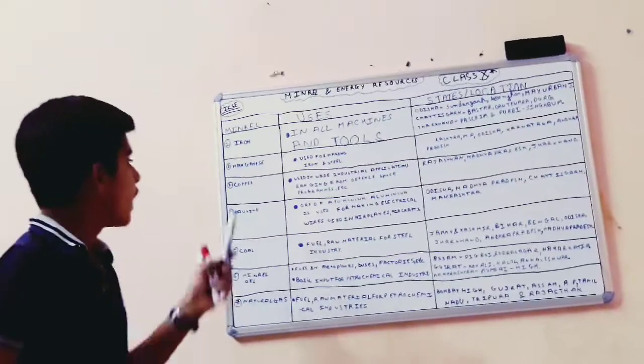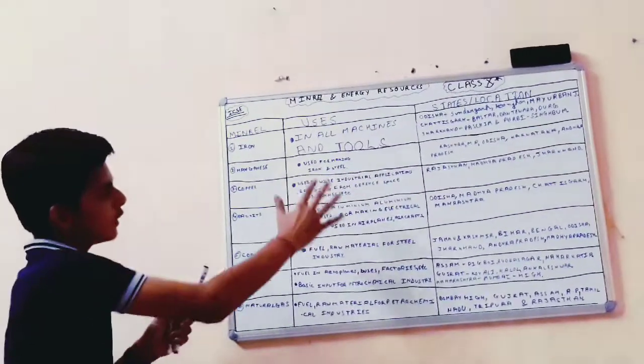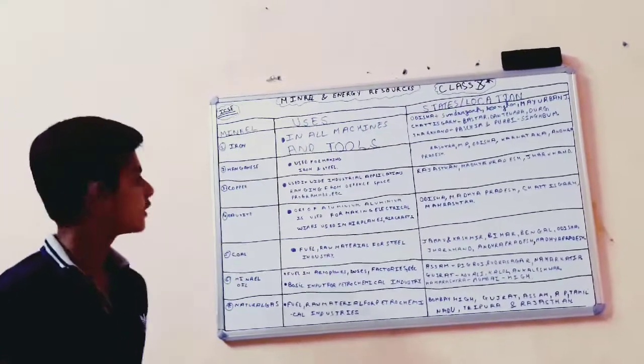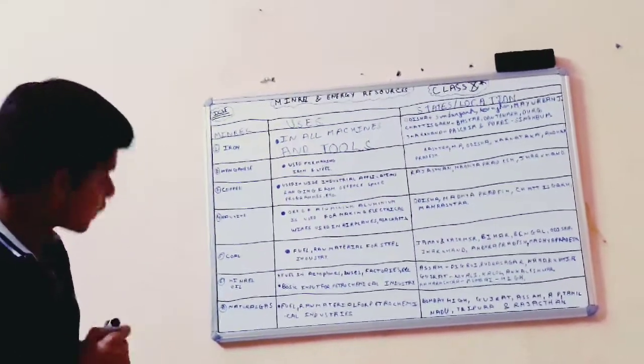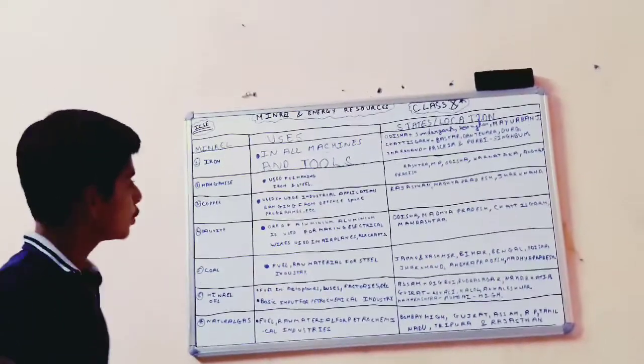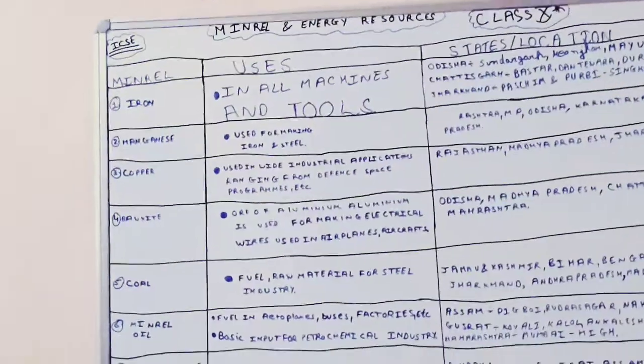Power and mineral sources - power and energy sources and their uses and the location where they are situated we will study in this video. And first is our mineral iron. Iron is used in all machines and tools.